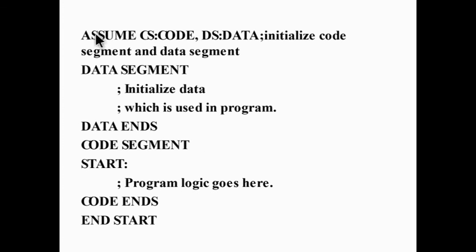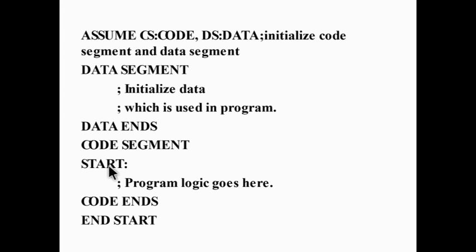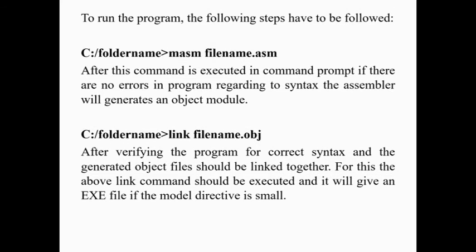There is also another method to write microprocessor instructions. Here we write: ASSUME CS:code segment, DS:data segment. We initialize the code segment and data segment. Data segment is followed by data ends; code segment is followed by code ends. In the data segment, we write the initialization of data required. In the code segment, we write START: — program logic goes here — meaning we write the instructions of the program in the code segment.